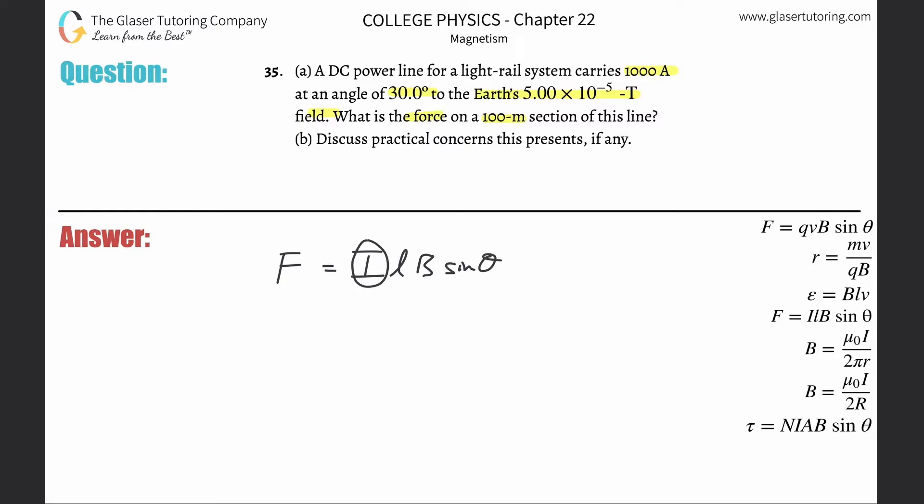They give us everything in the problem - it's like on a silver platter. The current here is 1000 amps, the length is 100 meters, the magnetic field is 5×10^-5 tesla, and then the sine of the 30 degree angle, because the 30 degree angle is the angle between the current and the magnetic field.